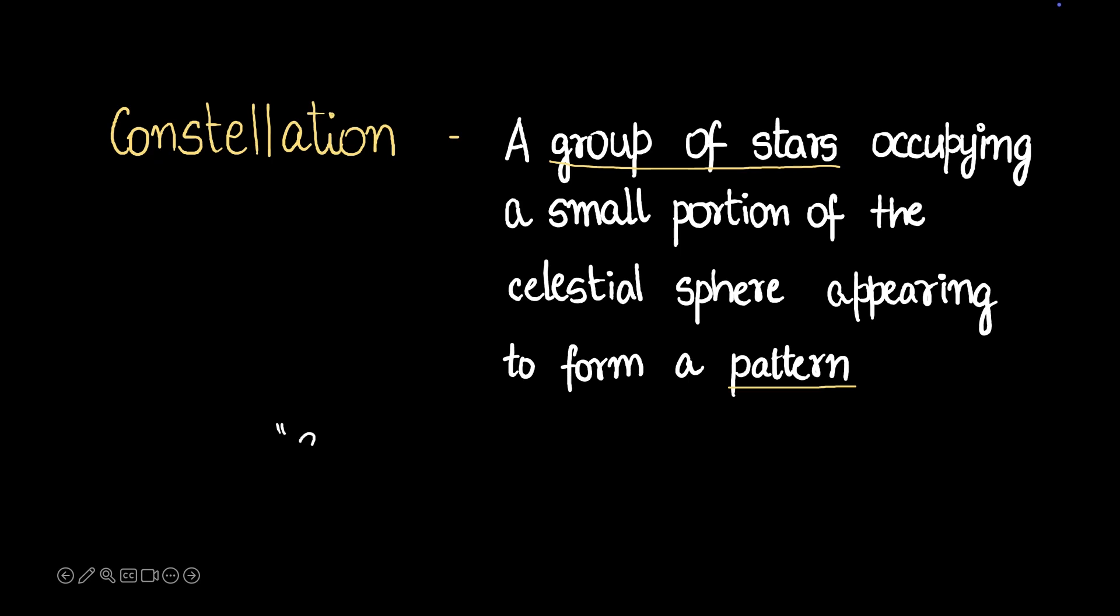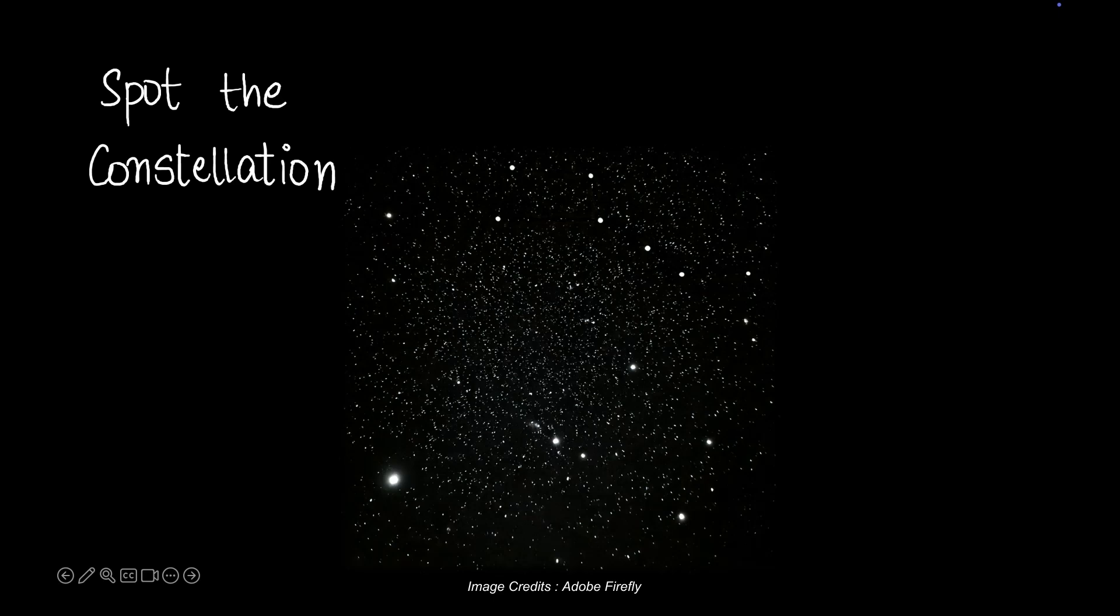Now we have 88 approved constellations by the International Astronomical Union and we'll look at a few of them now. Look at this picture of the night sky. What do you see here? Can you spot a constellation? If you're wondering where to look, I'm talking about this region. Can you see some brighter stars forming some kind of shape there?